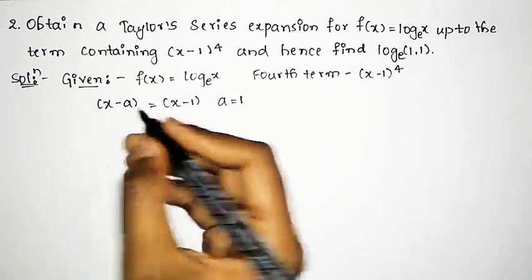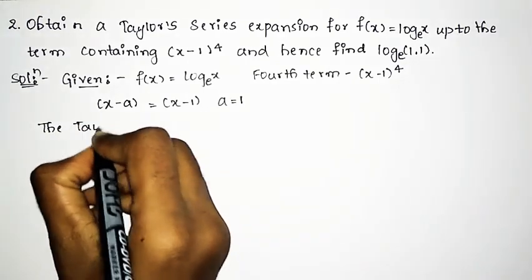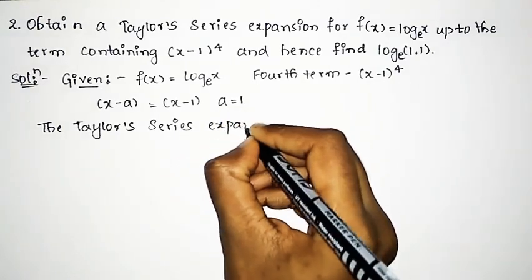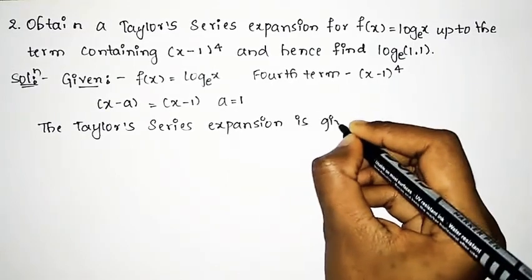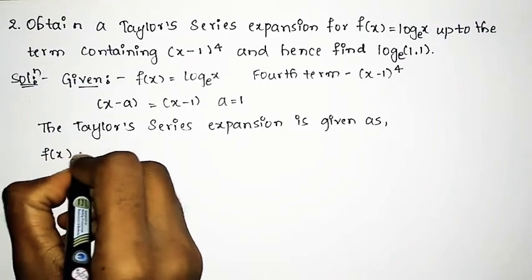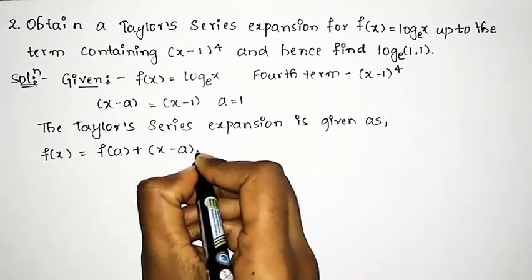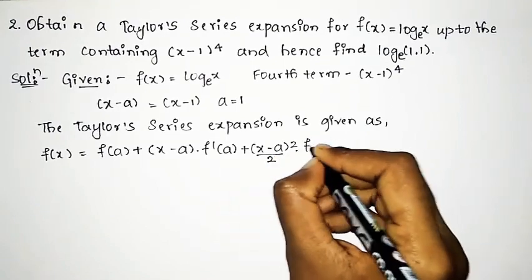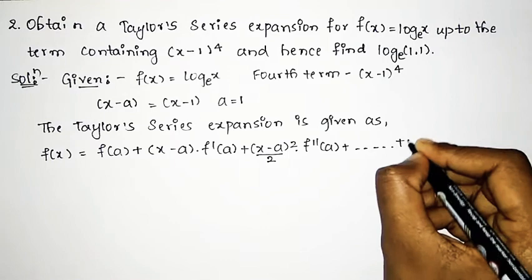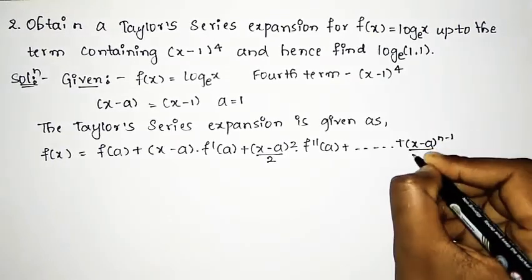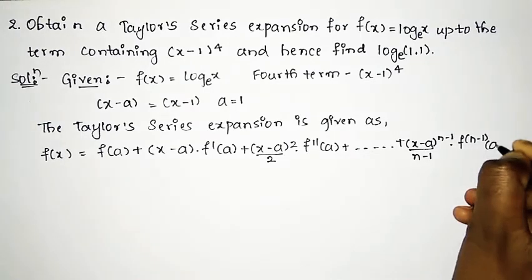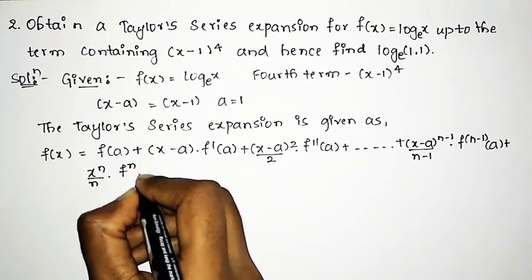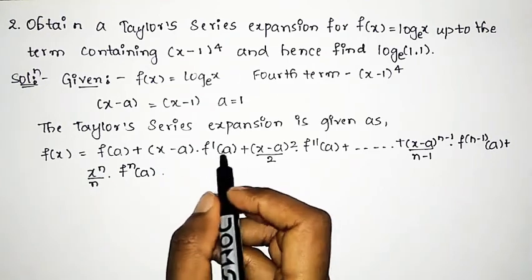Now we shall write the Taylor series expansion. The Taylor series expansion is given as: f(x) = f(a) + (x-a)·f'(a) + (x-a)²/2·f''(a) + ... up to the nth term, that is (x-a)^(n-1)/(n-1)·f^(n-1)(a) + (x-a)^n/n·f^(n)(a). Here we need to find up to the 4th term.